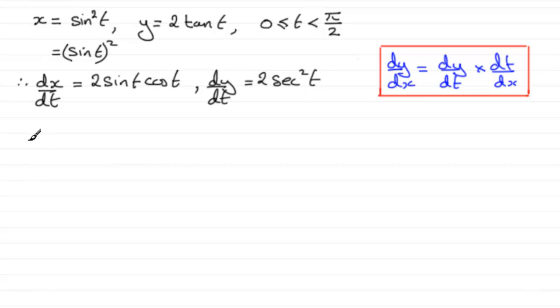Now, that means that by using the chain rule, dy/dx is going to equal dy/dt, which is 2 sec squared t, multiplied by dt/dx. We need to take the reciprocal of this.